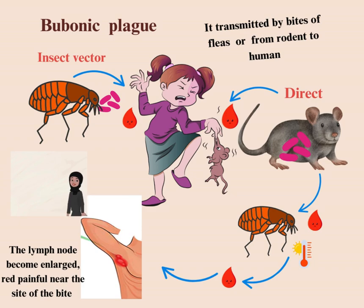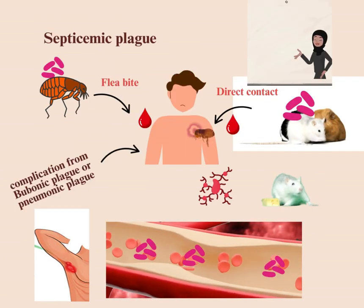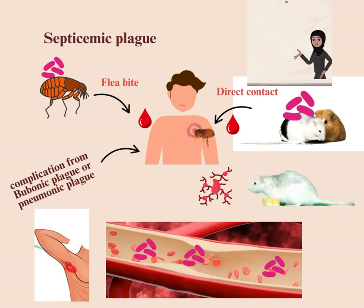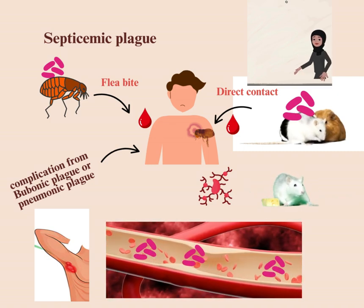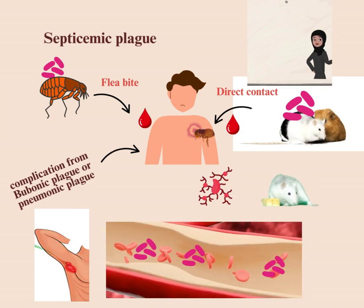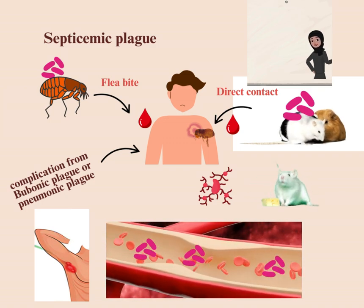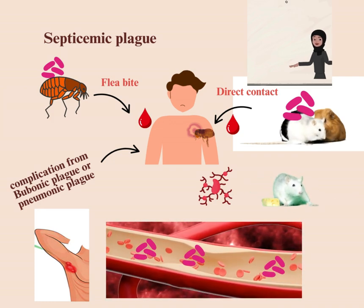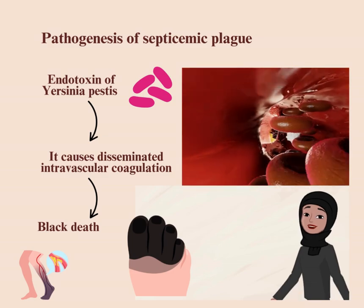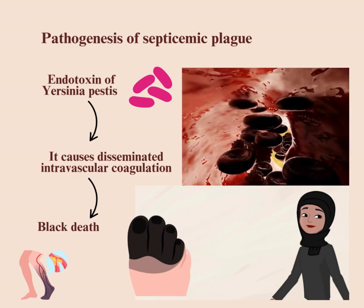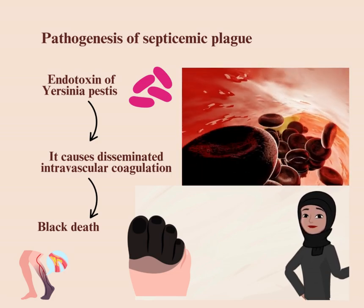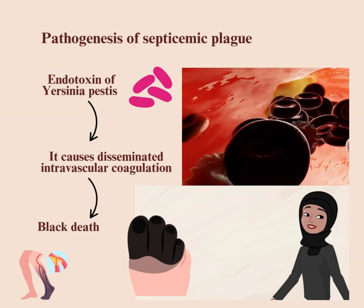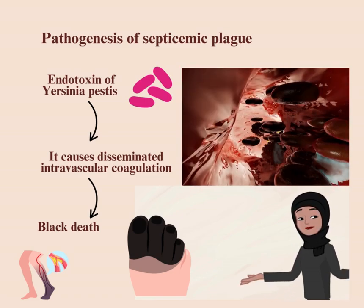In bubonic plague, it is transmitted by bites of fleas or from rodent to human. The lymph node becomes enlarged, red, and painful near the site of the bite. Septicemic plague may occur as a primary infection by flea bite or direct contact with animals, or as a complication of bubonic or pneumonic plague. Endotoxin causes disseminated intravascular coagulation, leading to ischemia and what is called black death.